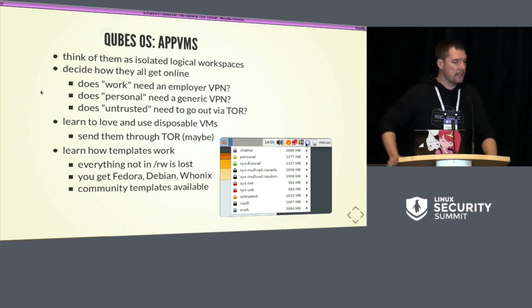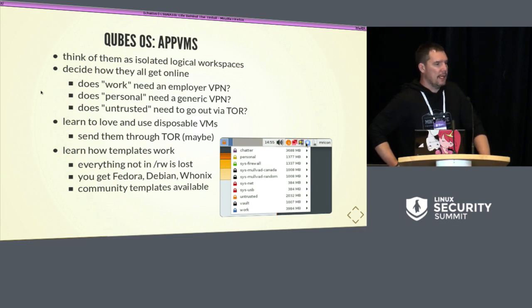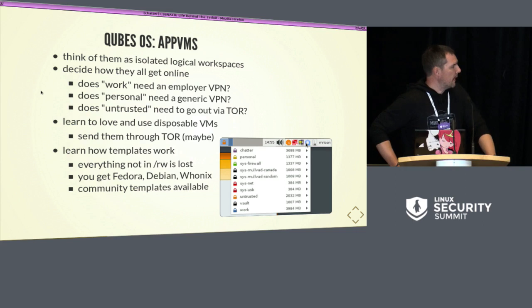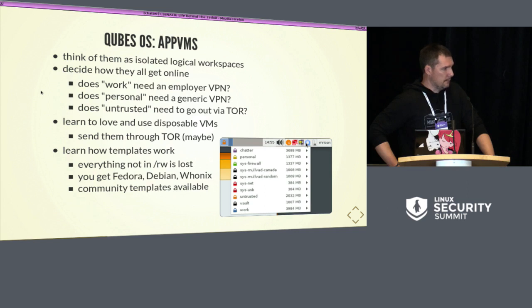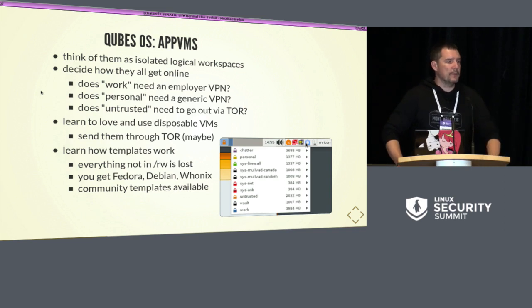Here's a screenshot of what I usually have on my workstation. I have Chatter, and a Personal VM for personal sites. Firewall is a dedicated VM that does packet filtering. SysMullvad-Canada is used for non-questionable internet connections; SysMullvad-Random is the random endpoint. SysNet is where the network card is assigned — the only VM that can actually control the hardware network cards, wired or wireless. There's an Untrusted VM connected through the random endpoint, a Vault VM with no network connections for storing sensitive files or your password database, and a Work VM used only for SSHing.